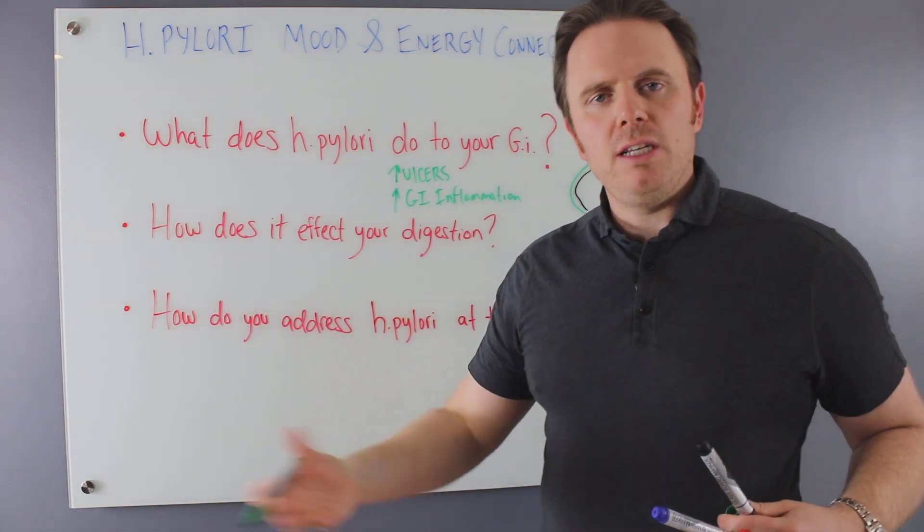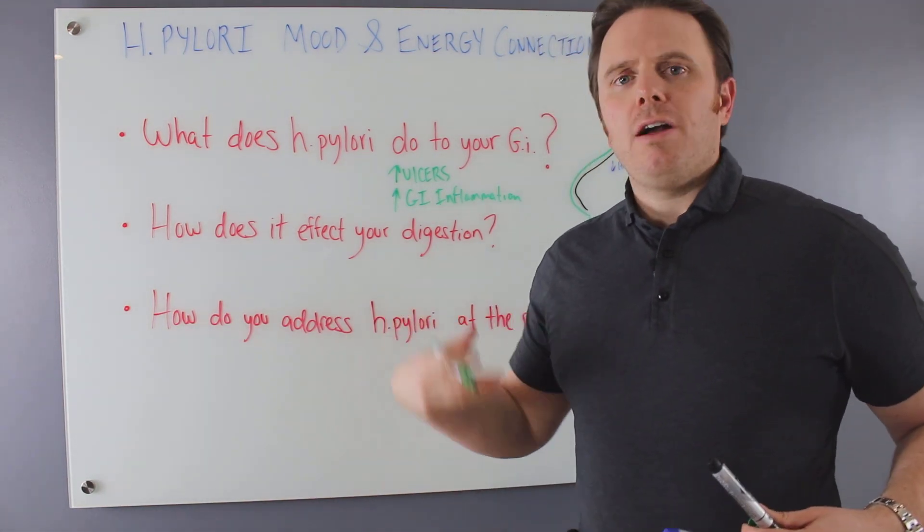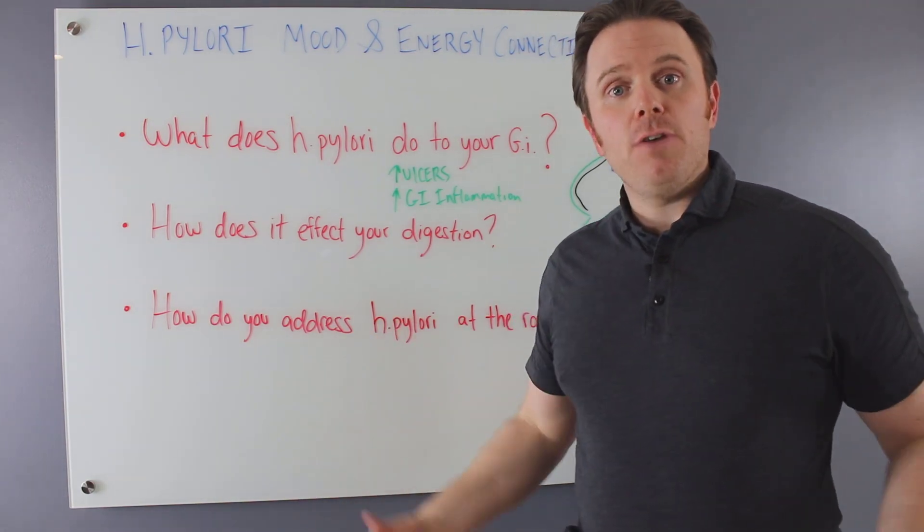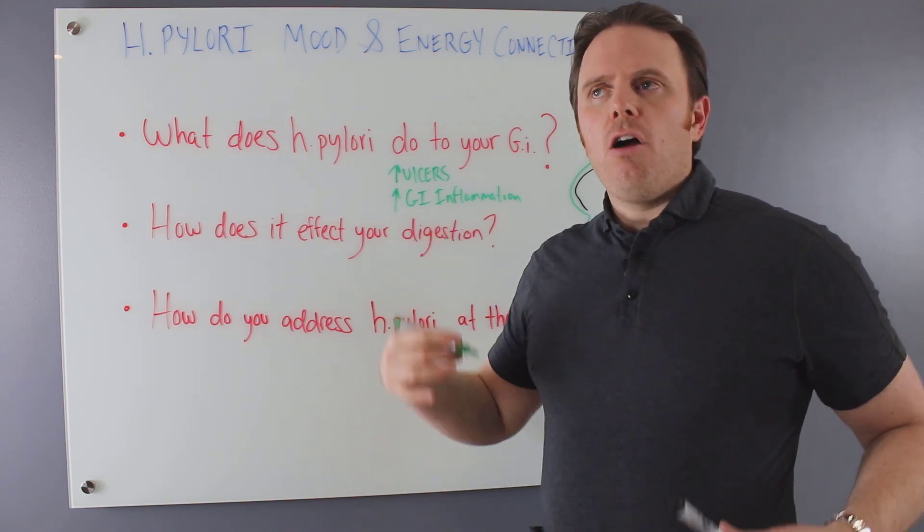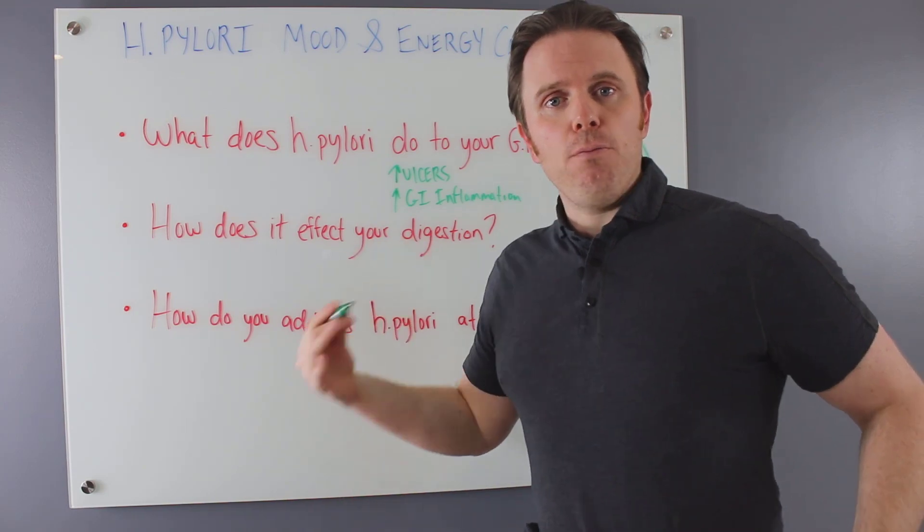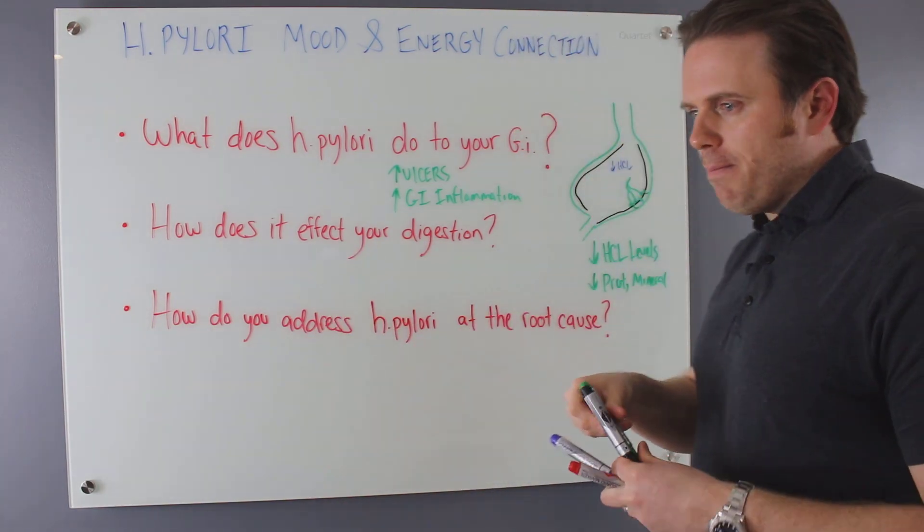Dopamine is made from tyrosine and phenylalanine. Serotonin is made from tryptophan. Our catecholamines are made from tyrosine. GABA is made from different amino acids, like theanine, so a lot of the amino acids that run our neurotransmitter energy systems are made from protein. So if we have issues with HCL, that can definitely impact that.